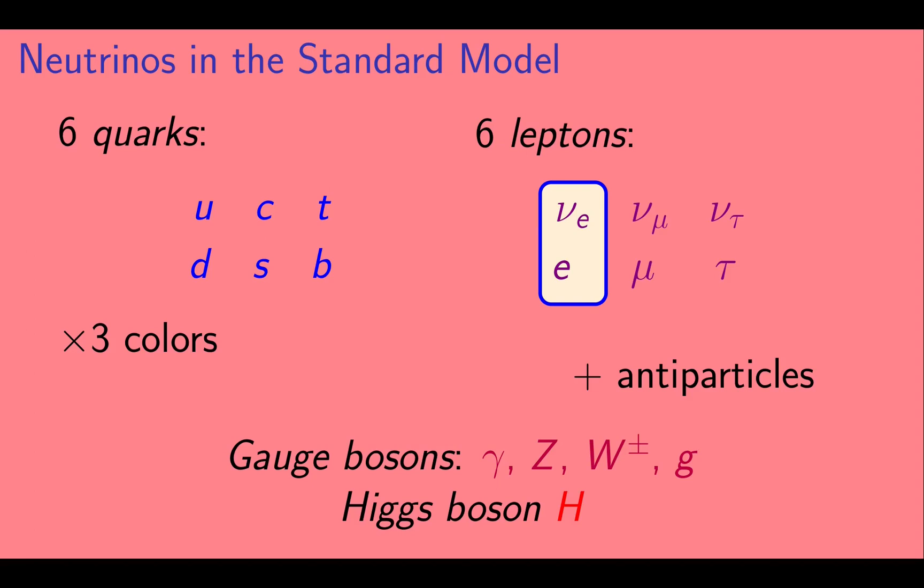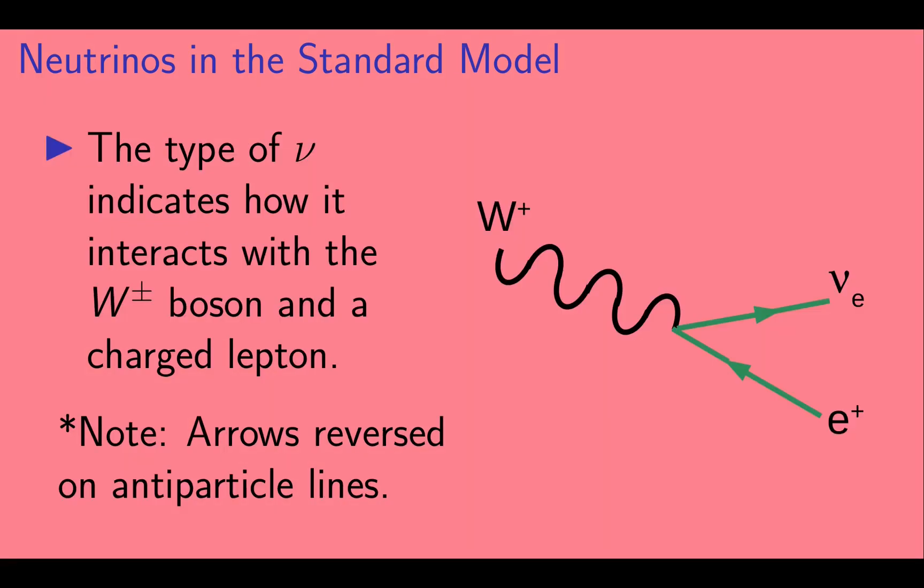So, the neutrino paired with the electron is the electron neutrino. Similarly, we have the muon neutrino and the tau neutrino. The type of neutrino indicates how it interacts with the W boson and a charged lepton.